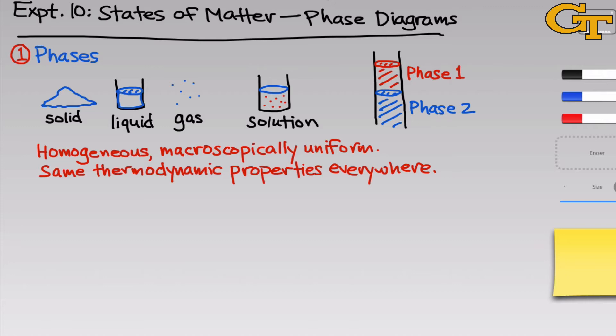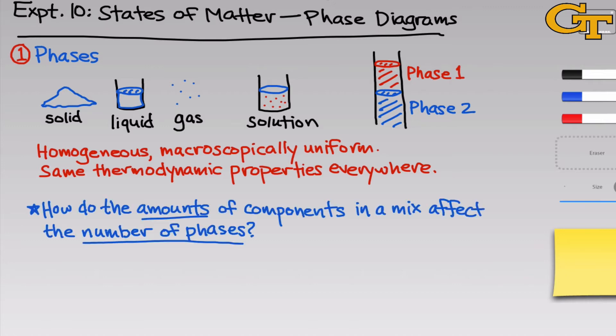But this isn't the case for all mixtures, and the key question for this experiment is: how do the amounts of the components in a mixture affect the number of phases that we see? When we have a 50-50 split of components, we might expect two phases, but when the balance is more uneven and the concentration of one component in the other is very small, we might expect that component that's sort of acting as the solute to dissolve.